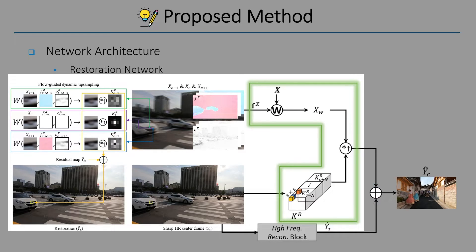This is an example of flow-guided dynamic upsampling. Similar to the earlier flow-guided dynamic downsampling, it restores sharp high-resolution frames from a blurry low-resolution sequence using the predicted flow and kernel.